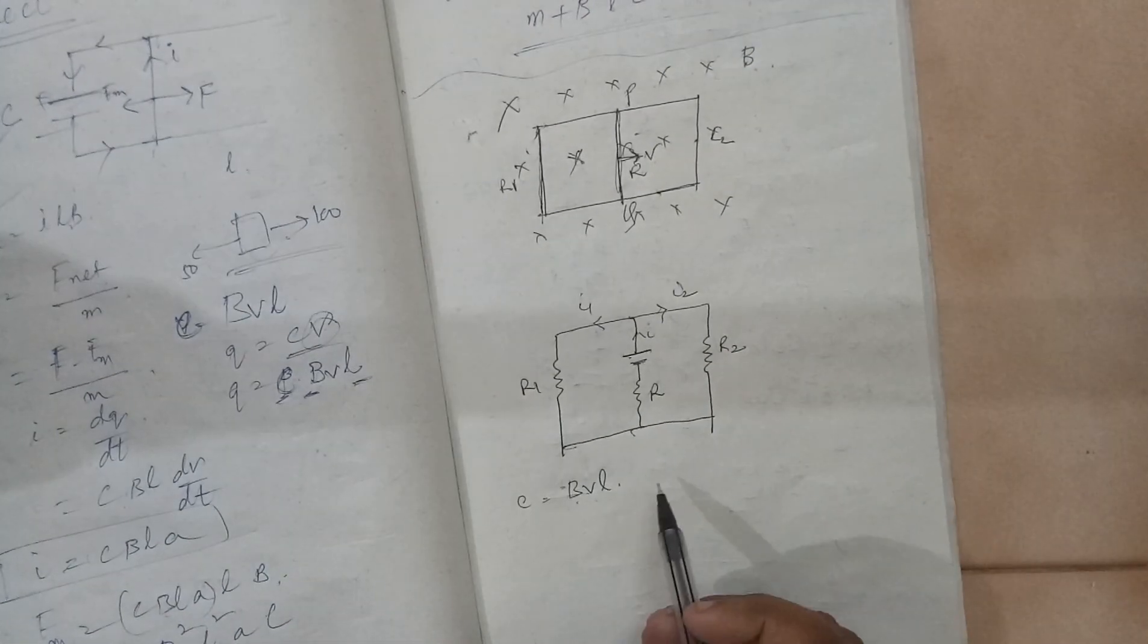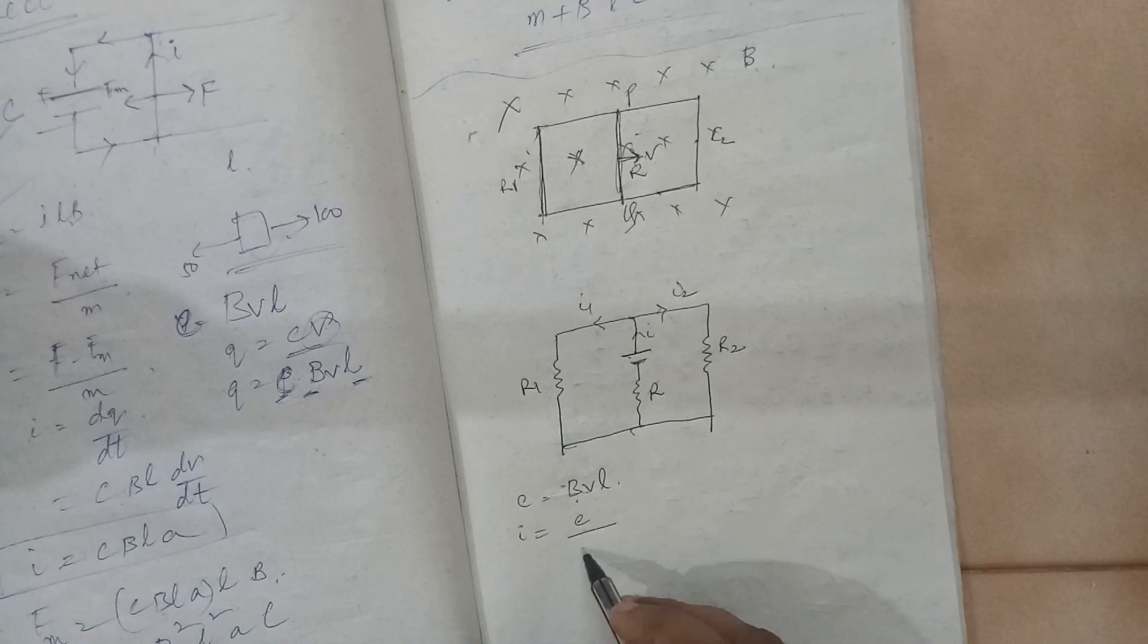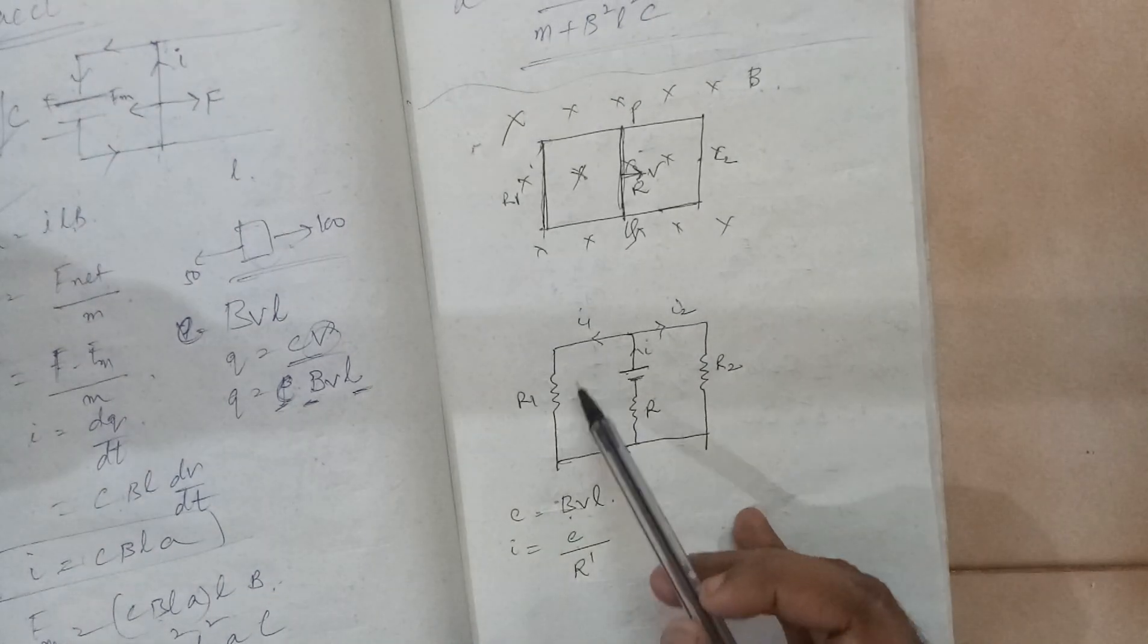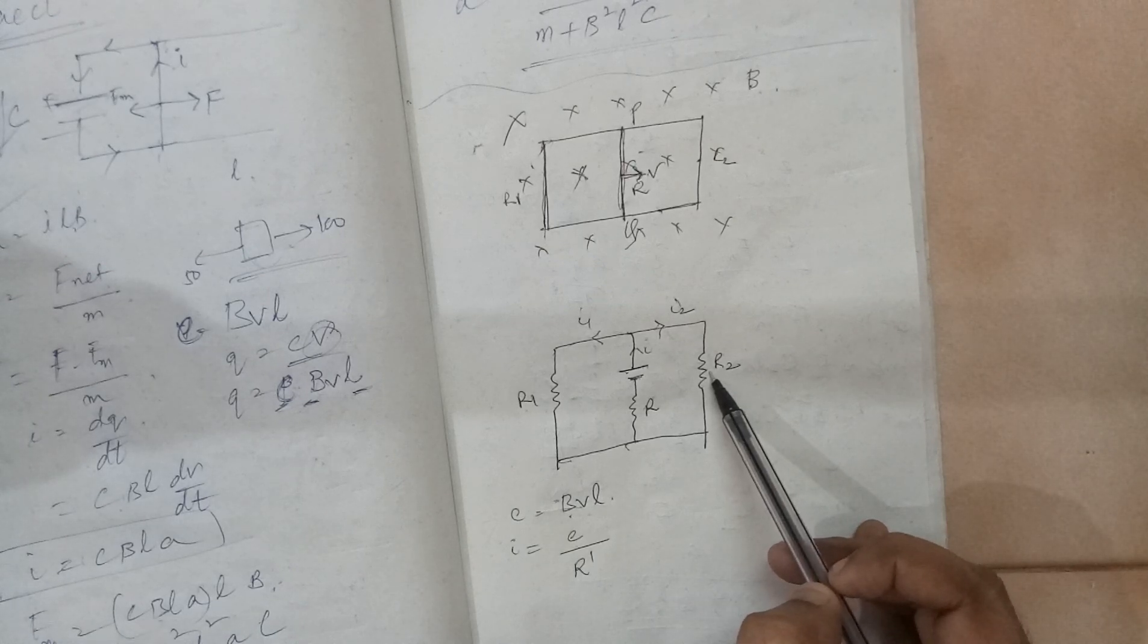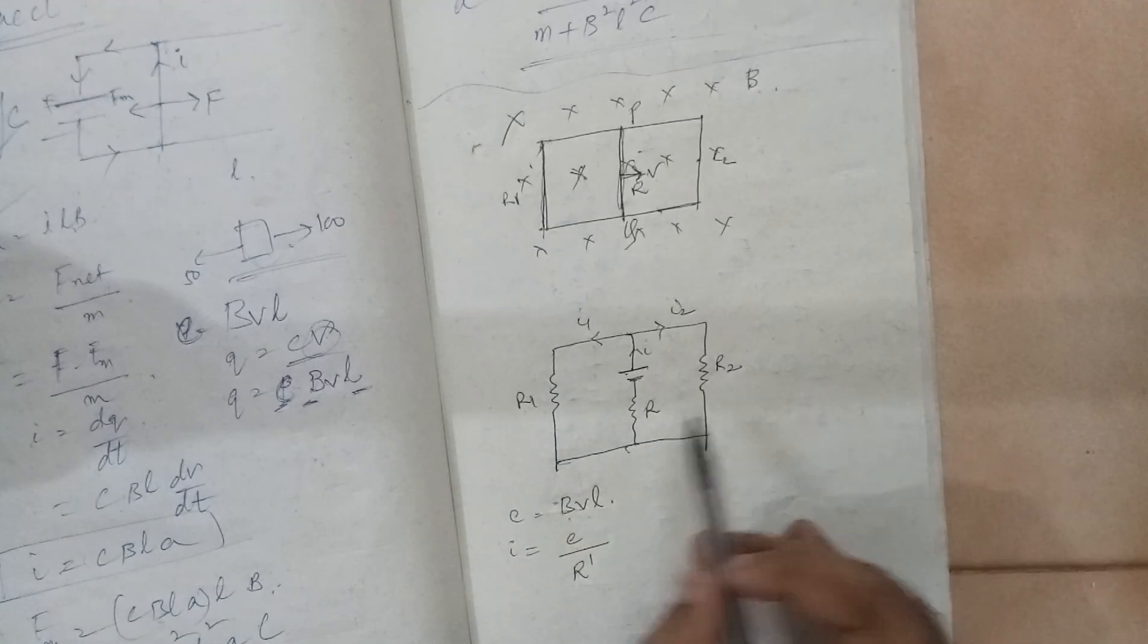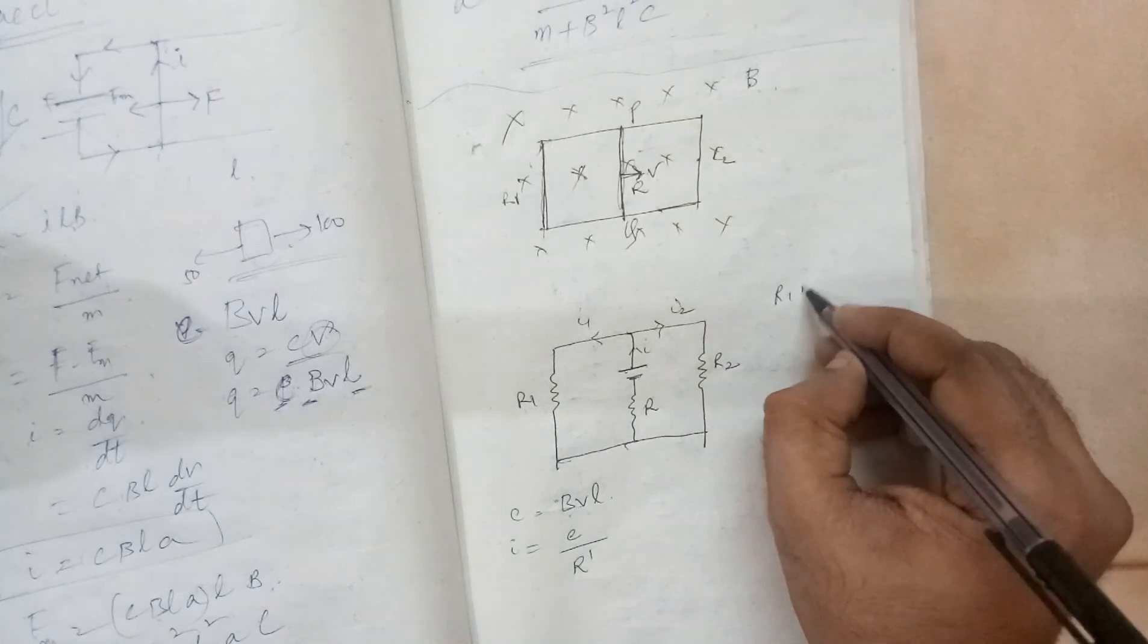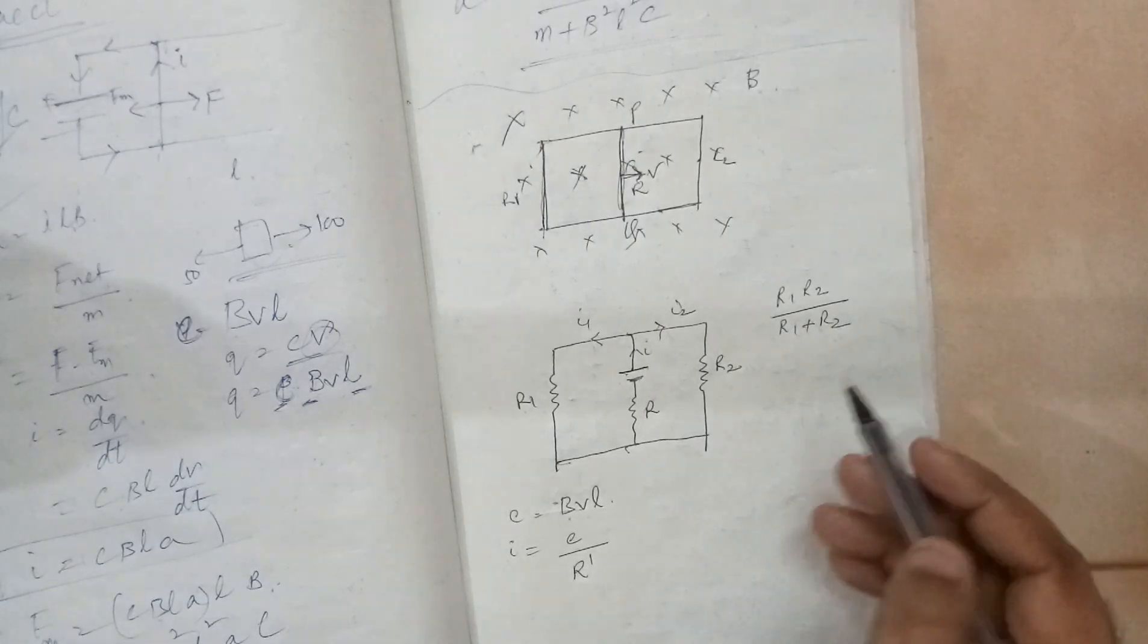This I value will be E divided by R dash. You can see here, this R1 and R2, they are in parallel. So because they are in parallel, what is the effective resistance between them? It is R1, R2 divided by R1 plus R2.